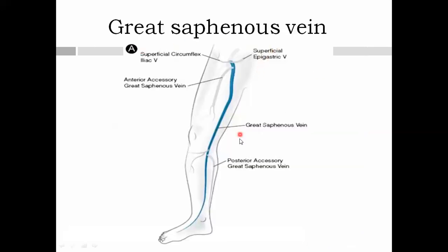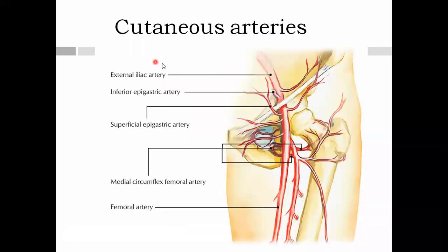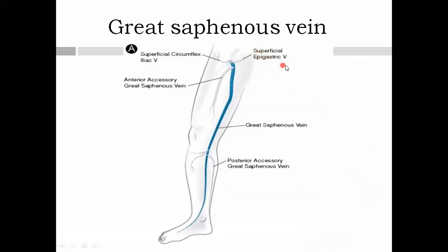The great saphenous vein arises in the medial part of the dorsum of the foot, goes upward, and drains into the femoral vein. Before draining into the femoral vein, it pierces a structure called the cribriform fascia. Before doing so, the great saphenous vein receives three tributaries: the superficial epigastric, superficial circumflex iliac, and the superficial external pudendal veins.